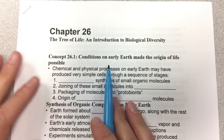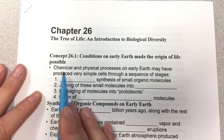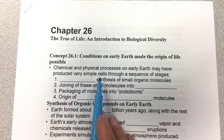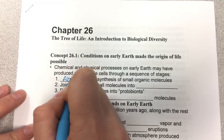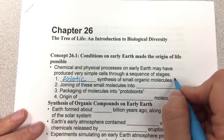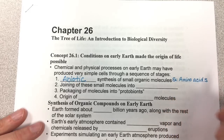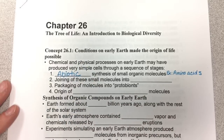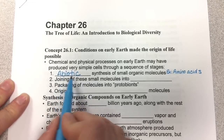The first section of chapter 26 is about early Earth. The conditions on early Earth make the origin of life possible. Chemical and physical processes on early Earth may have produced very simple cells through a sequence of stages. The first stage is abiotic synthesis — abiotic means not within living things — of small organic molecules. An example would be amino acids, which are the building blocks of protein and contain carbon. These can be made within the laboratory, hence the abiotic part.